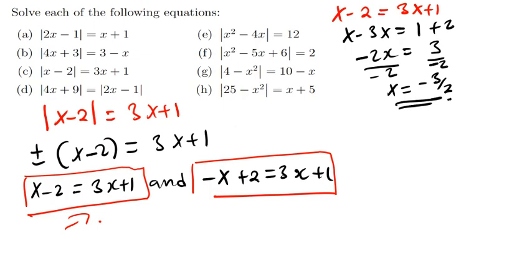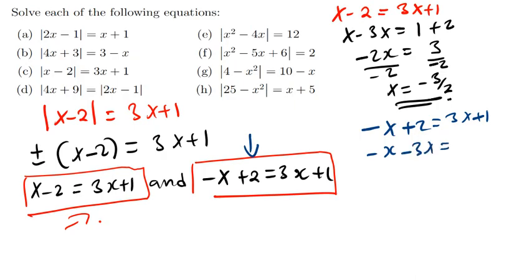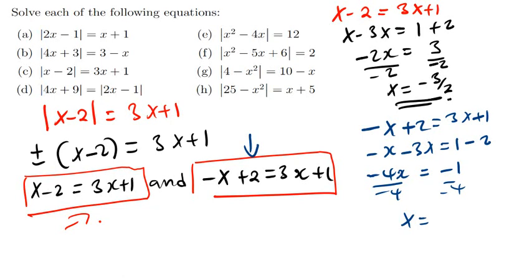Now the second equation: negative x plus 2 equals 3x plus 1. Shifting 3x to the other side: negative x minus 3x equals 1 minus 2, so negative 4x equals negative 1, divide both sides by negative 4, giving x equals 1 over 4.